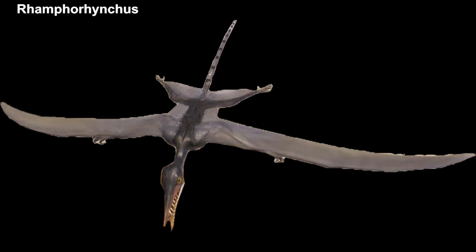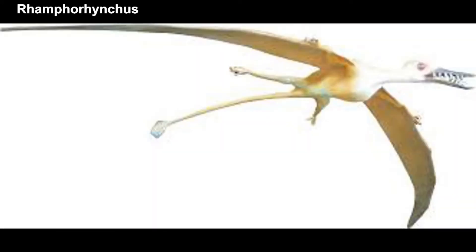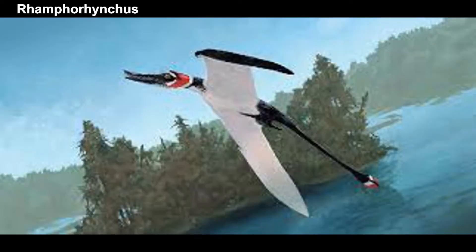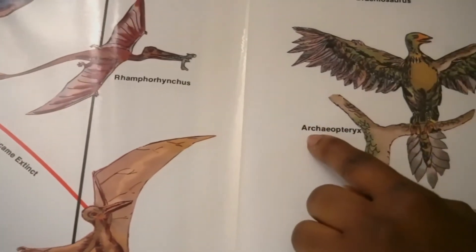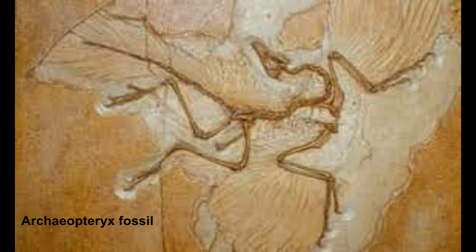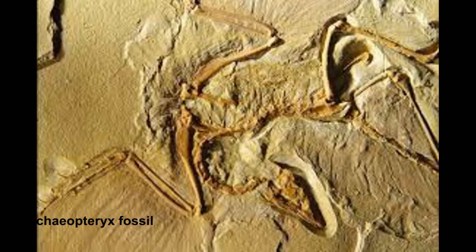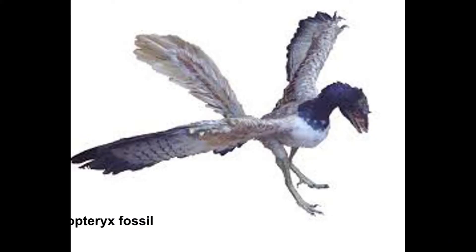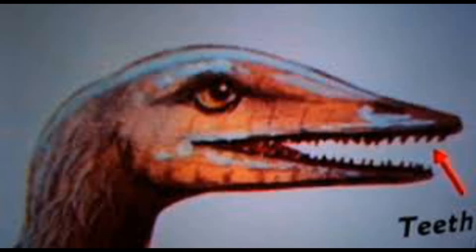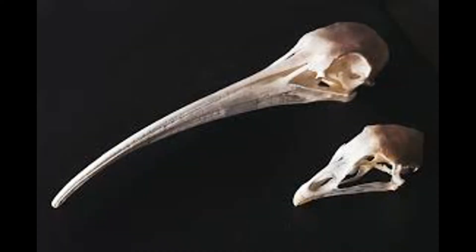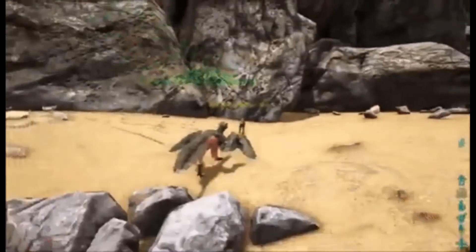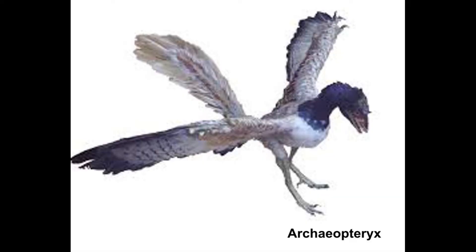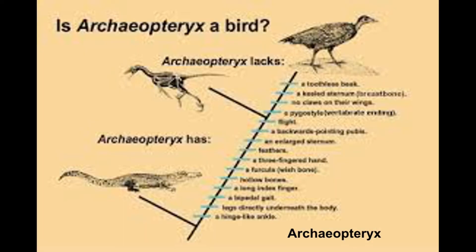Since the hollow bones of birds do not fossilize easily, there was little information available about the development of these animals prior to the discovery of the Archaeopteryx in Germany, which was found in the 19th century. Imagine the excitement when a complete skeleton of the very first bird was discovered. Unlike present-day birds, Archaeopteryx had teeth, a long bony tail, and solid bones. It was so well preserved that one could see the fine details of the feathers. What made it even more exciting was that it was a flawless evolutionary link between reptiles and birds.